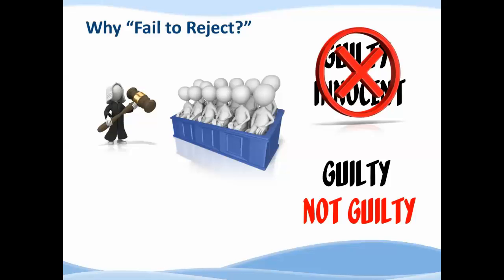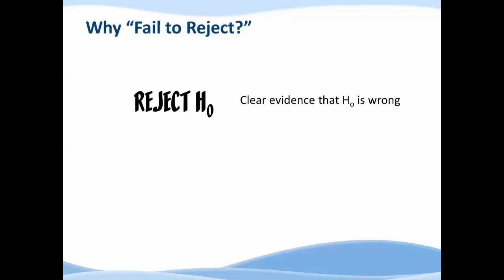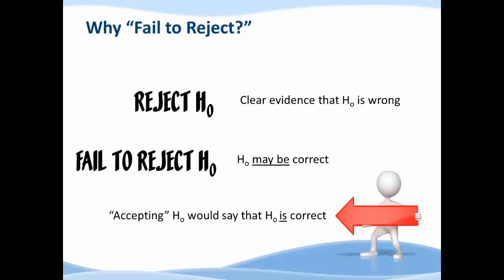Not guilty is different than innocent. If they have overwhelming evidence that the person on trial is guilty, they'll call them guilty. If that evidence is not overwhelming, they don't say that this person's innocent, they call them not guilty. What does that mean to us? For your null hypothesis, if you have clear evidence that it's wrong, we will say we reject the null. If we don't have clear evidence that it's wrong, we say we fail to reject the null.